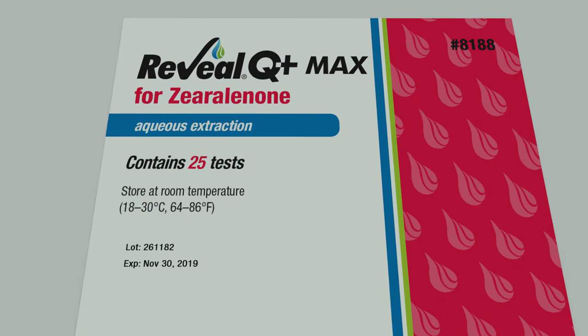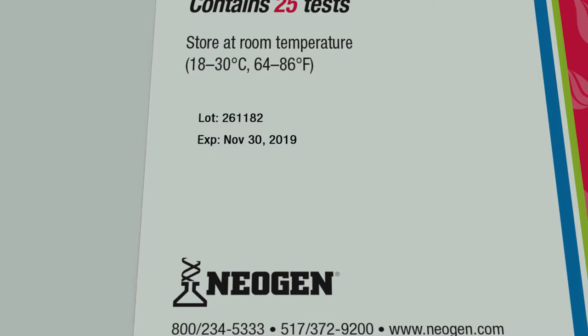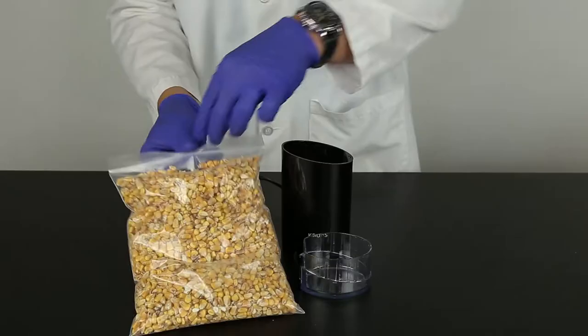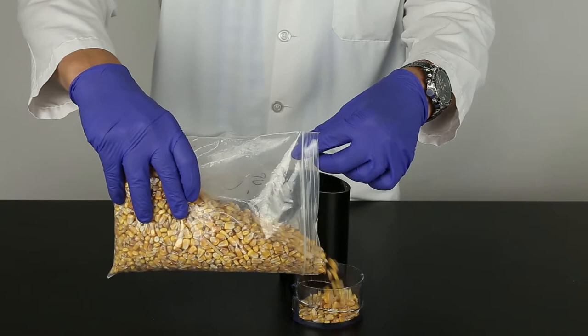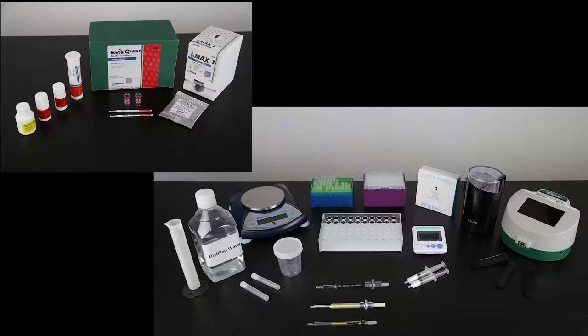Remember to always store the test strips in the stay-dry tube at room temperature. The kit should be stored at room temperature when not in use. Do not use kit components beyond the expiry date. In this demonstration, we will follow the testing procedure for corn. Please follow the written instructions in the kit insert for other commodities.